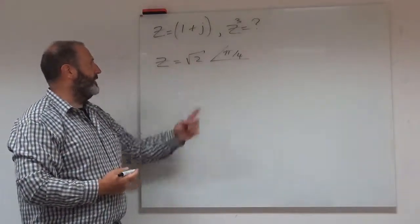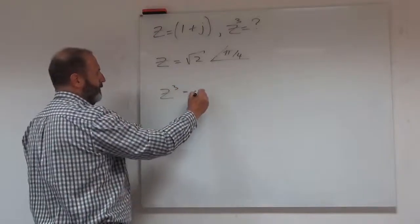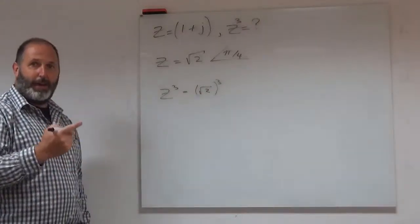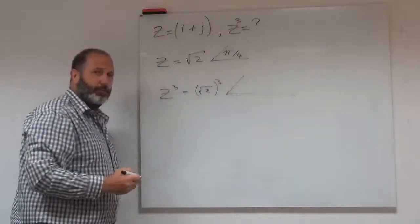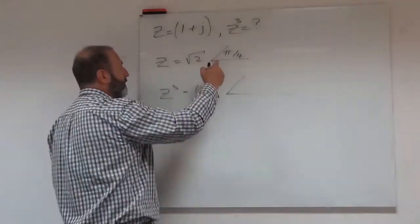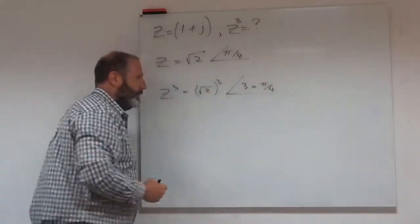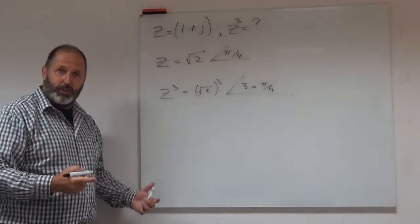So if I now want to find z cubed, all I would do is I would have root 2 to the power of 3, so it's just r to the power of n. And my new argument or my new angle would just be n times the original angle. So it would be 3 times pi over 4. I have my solution straight away.